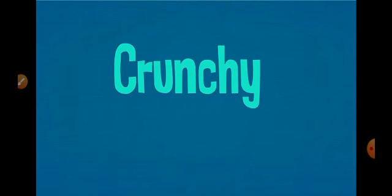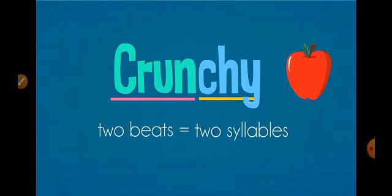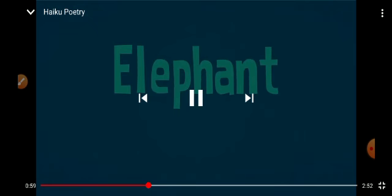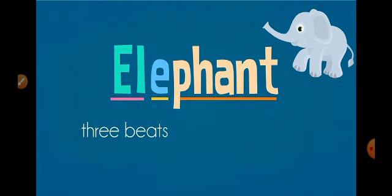But if we see this word 'crunchy' we pronounce this word like this: crunchy. That means there are two syllables or two beats. Elephant. Elephant. Elephant—that means there are three beats or three syllables.